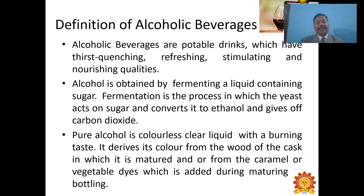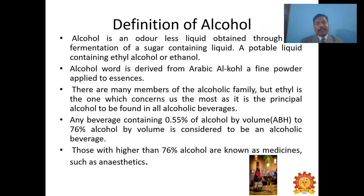Alcohol is obtained by fermenting a liquid containing sugar. Fermentation is a process in which yeast acts on sugar and converts it to ethanol, giving off carbon dioxide. Pure alcohol is a colorless, clear liquid with a burning taste and is very difficult to consume. It derives its color from the wood of the cask in which it is matured, or from caramel or vegetable dyes added during maturing and bottling. Alcohol is an odorless liquid obtained through the fermentation of a sugar-containing liquid — such as grapes, sugarcane, or various other products.